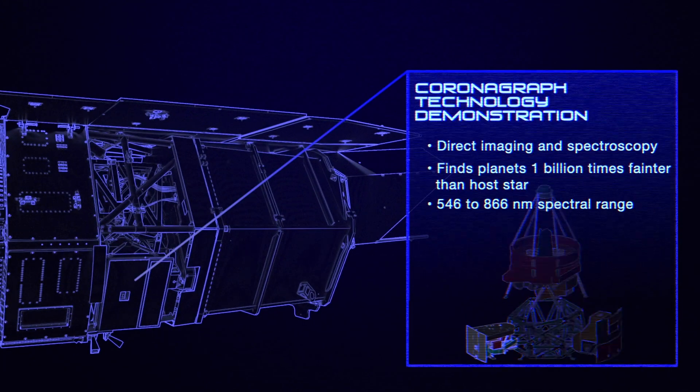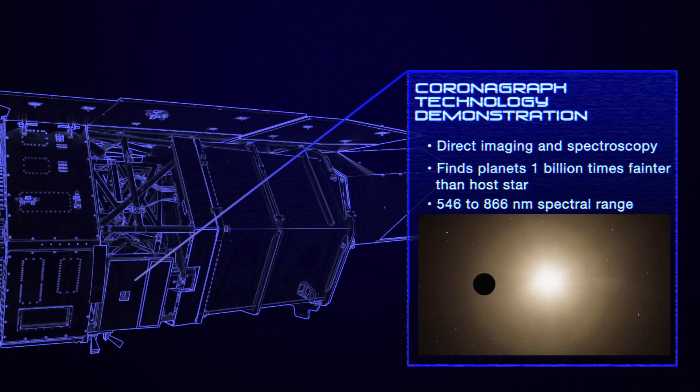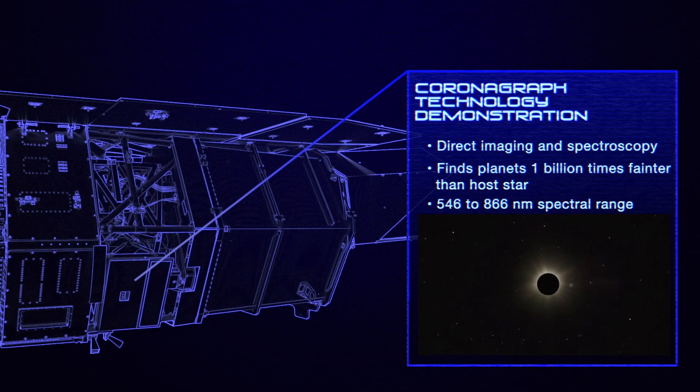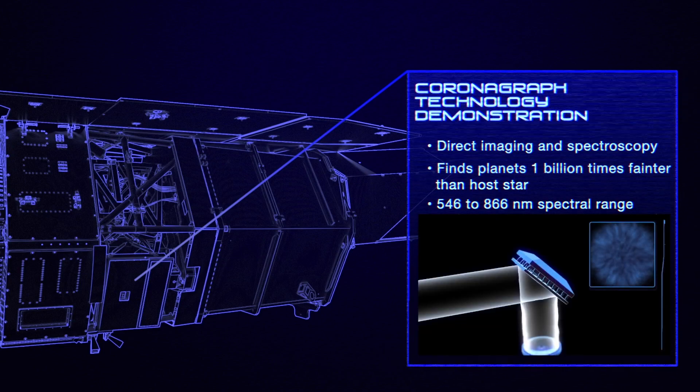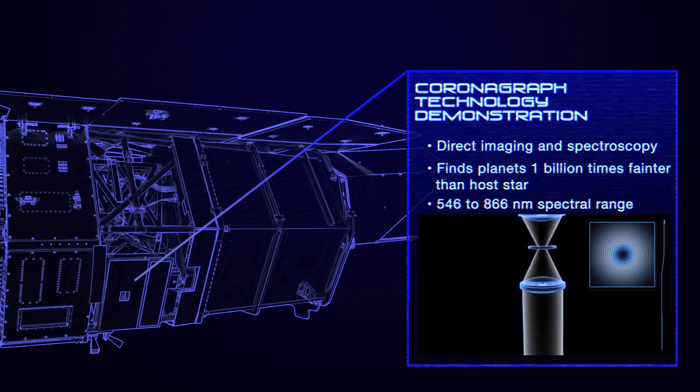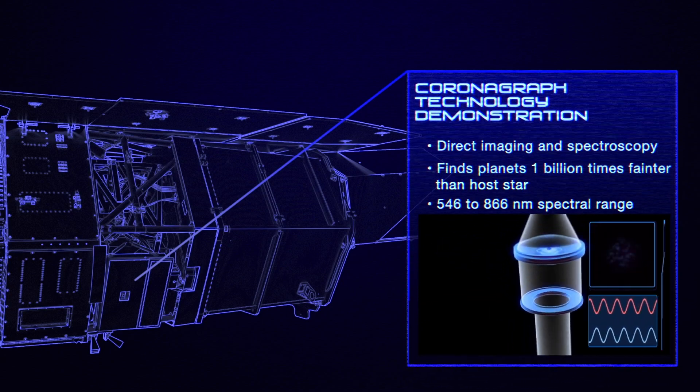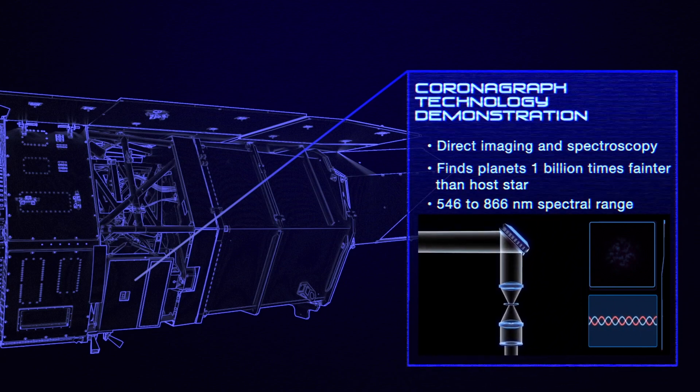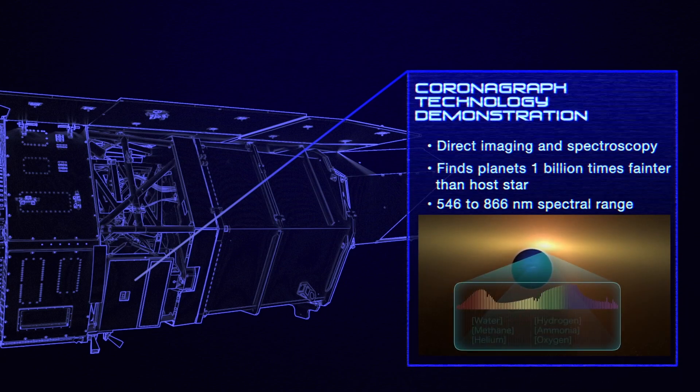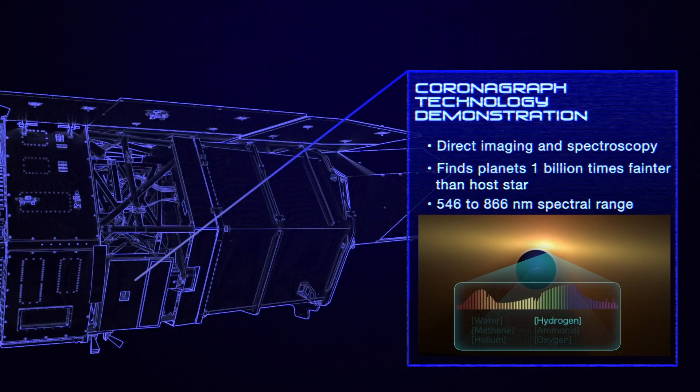To get the observations we need, the Roman Space Telescope will employ three techniques to study exoplanets: microlensing, direct imaging, and the transit method. Each of these has its own advantages and limitations, and together they will provide a comprehensive view of the formation, evolution, and physical properties of planetary systems.